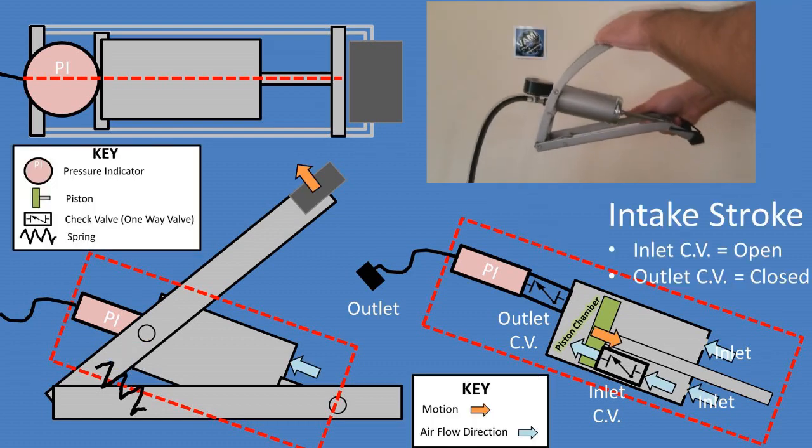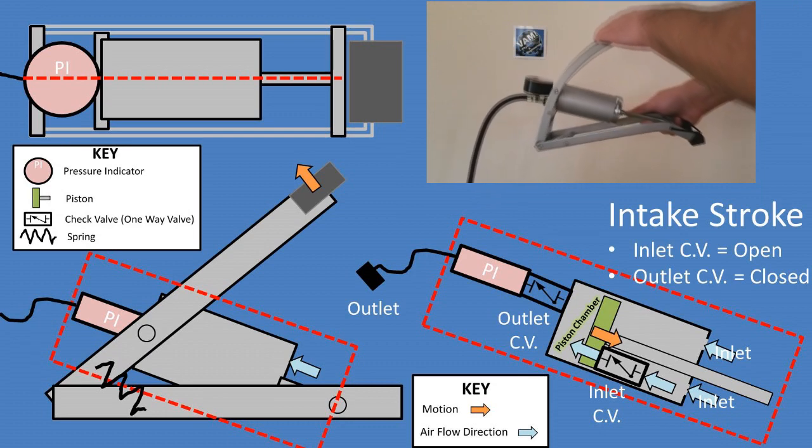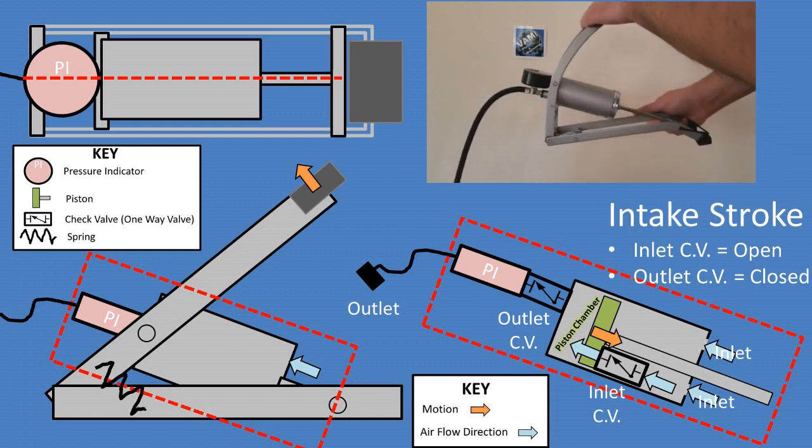On the intake stroke, or when the piston chamber volume is expanding, the inlet check valve allows for the air to flow through which allows the piston chamber to be filled with air. During the intake stroke, the outlet check valve remains closed.